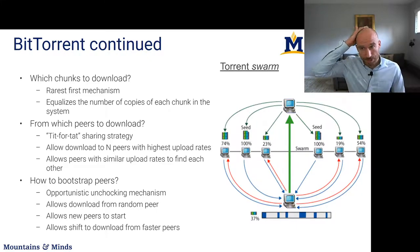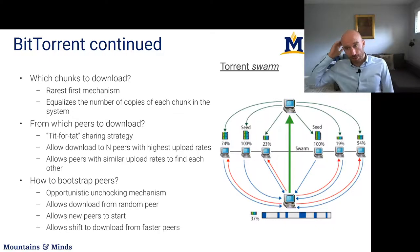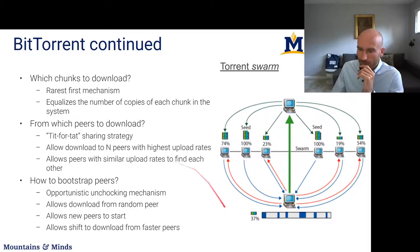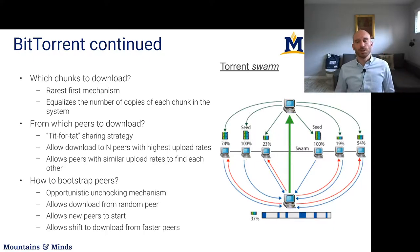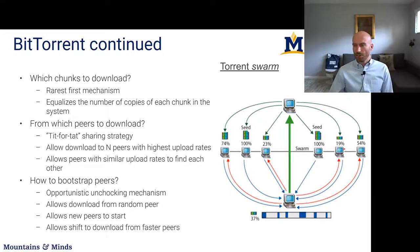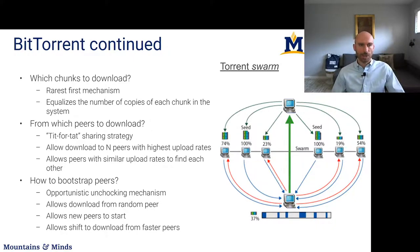The first question is which chunks to download. If you divide a file into different chunks — some already downloaded in blue, some still missing in grey — and this client connects to a swarm of nodes, which chunks should they ask for first? The strategy, which is pretty clever, is to ask for the rarest one first. A client looks at all the chunks these peers have, figures out which chunk is least represented, and downloads that, thereby creating a copy available for others. This mechanism equalizes the number of copies of each chunk in the collaborative download system.